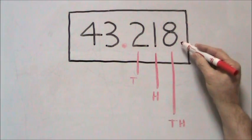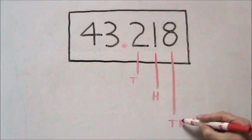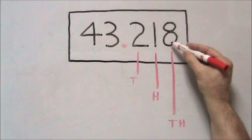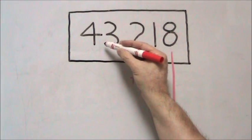And the 8, the third one, is in the thousandths place. Once again, all 3 decimal numbers are part of the whole number 43.